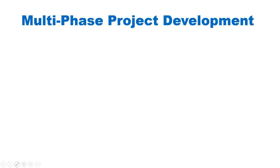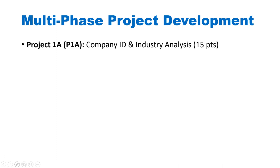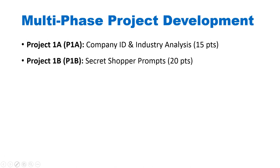Because this is a multi-phase project, let me go over the five stages. The first is Project 1a, where you will identify a small to medium-sized business to observe — it cannot be a large business like Macy's, Starbucks, or Target. You will also do an industry analysis to inform you about the market space in which that business operates, worth 15 points. Project 1b involves producing the secret shopper prompts, worth 20 points.